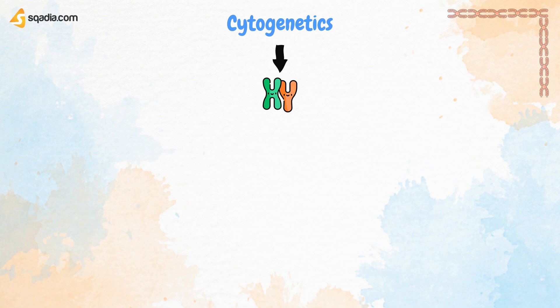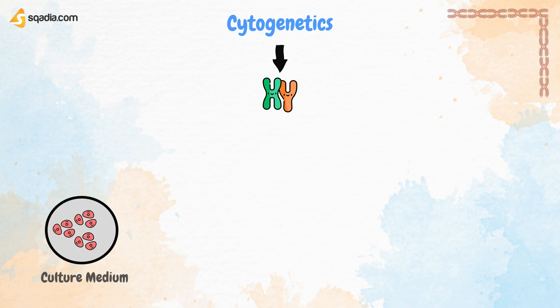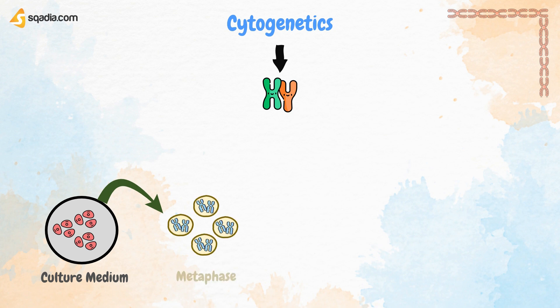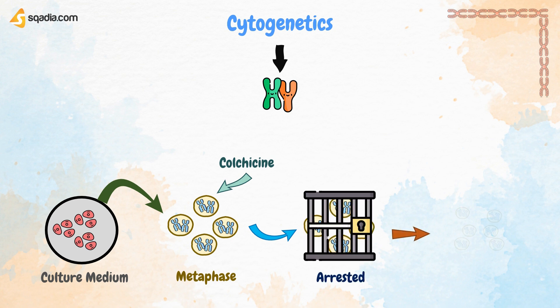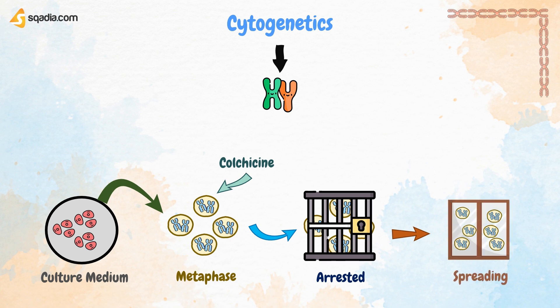A visual karyotype is prepared by growing the cells in short-term culture medium. The cells are arrested at metaphase of mitosis by adding a spindle inhibitor such as colchicine. The cells are then spread on a glass slide and stained with Giemsa stain. In modern practice, this step is replaced by digital imaging.